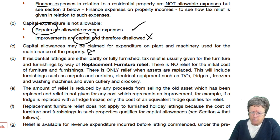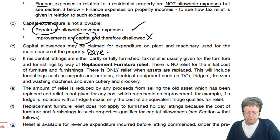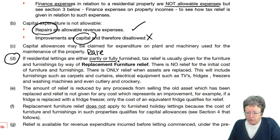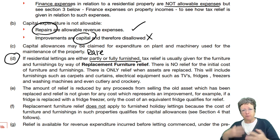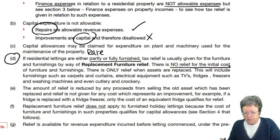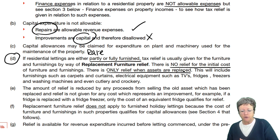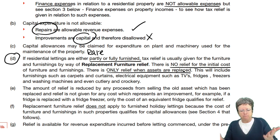Capital allowances — that's rare. Now, this is a new one: it's called Replacement Furniture Relief. For residential lettings that are partly or fully furnished, you get relief for buying furniture under the Replacement Furniture Relief Scheme. No relief for the initial cost when you first put it in — you only get it when the asset is replaced. So not when you first buy it, but if something needs replacing, you can make a claim for that as an expense.